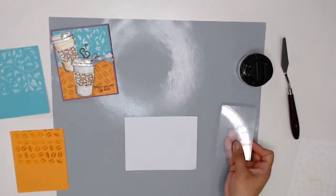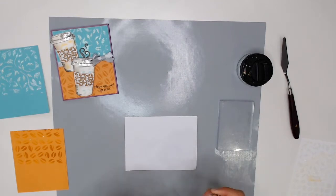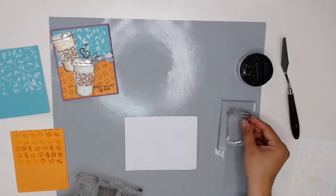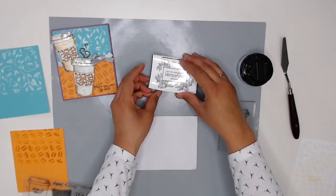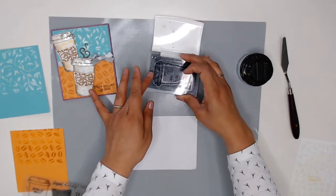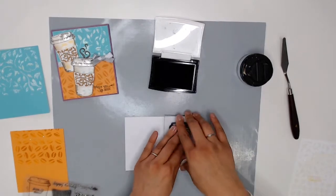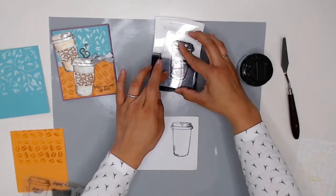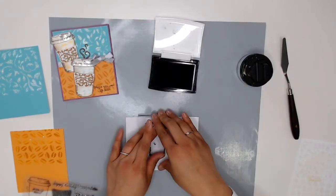Next I want to stamp my coffee cups. I love these coffee cups they are so cute and what I'm going to do is just mount my stamp onto the block and I'm going to be using some Versafine ink in onyx black. I love this stuff and I'm going to stamp two coffee cups.